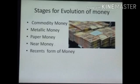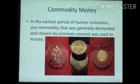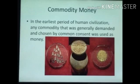Next we see stages in the evolution of money: commodity money, metallic money, paper money, near money and recent form of money. First we see about commodity money. In the earliest period of human civilization, any commodity that was generally demanded and chosen by common consent was used as money, like salt, rice, wheat, weapons, etc.